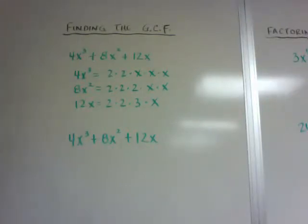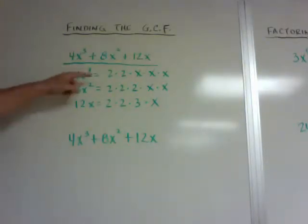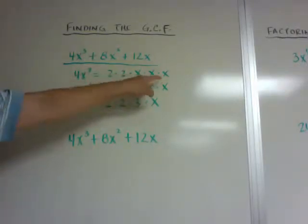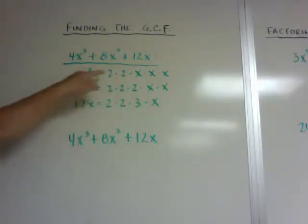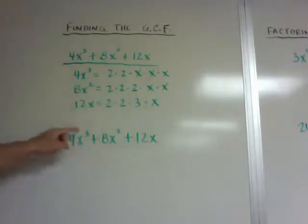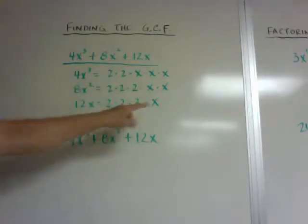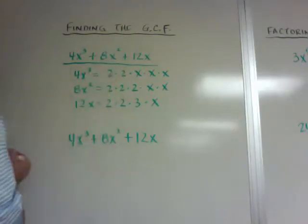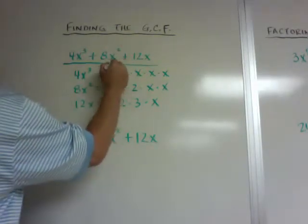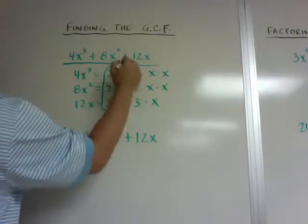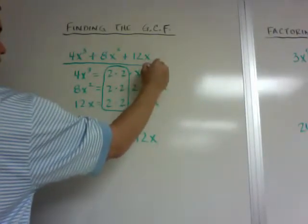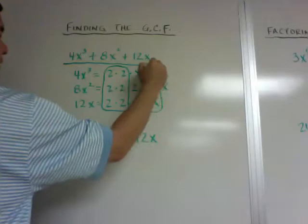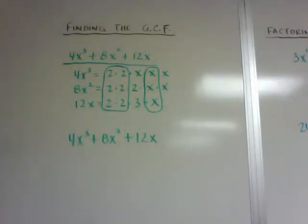So if this is my polynomial, and it says find the GCF, what you can do is do the prime factorization. You can see 4 is 2 times 2, and then there's 3x's, 8 is 2 times 2 times 2 with 2x's, and 12 is 2 times 2 times 3 with another x. So what you do is just look for whatever is common, so I can see that these are common, and then I can have 1x in each one. After that, nothing else is in common.